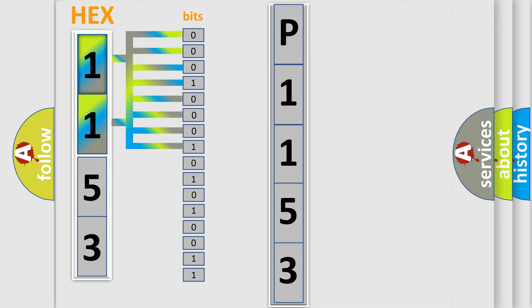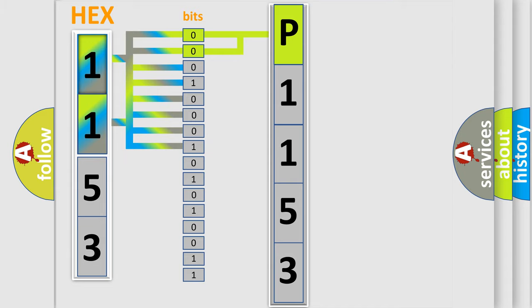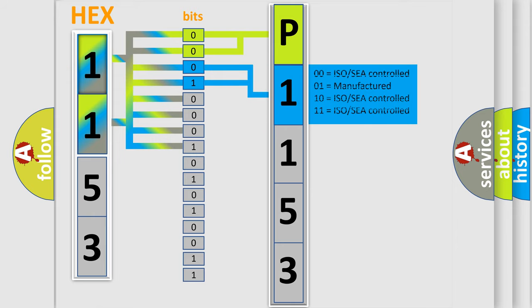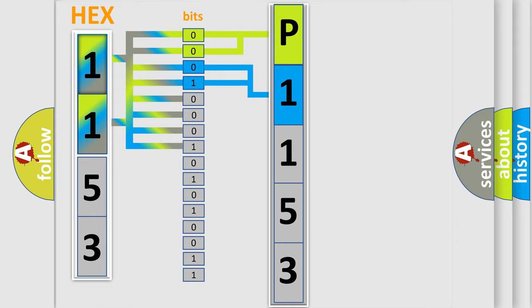Zero is the low level, and one is the high level. By combining the first two bits, the basic character of the error code is expressed. The next two bits determine the second character, and the last bits of the first byte define the third character of the code.